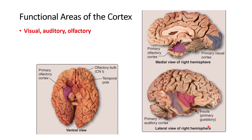You also have the olfactory cortex, which is in the medial part of the temporal lobe and is mainly part of the limbic system, receiving information from the olfactory tract and olfactory bulb. There is also the gustatory area, which is inside the lateral sulcus — if you open the lateral sulcus, that area is called the insula. The olfactory cortex can also be seen in the inferior view of the temporal lobe, still in the medial part.